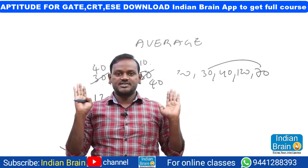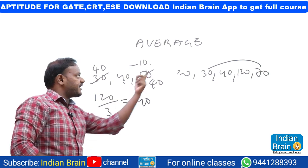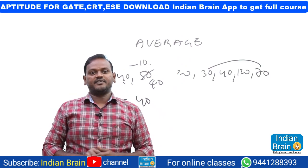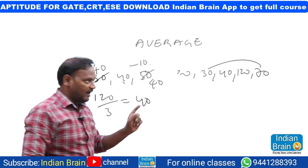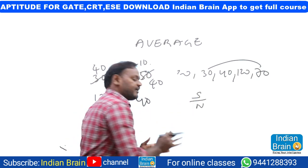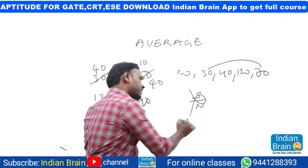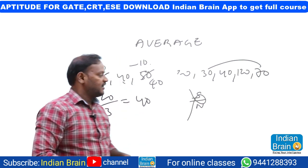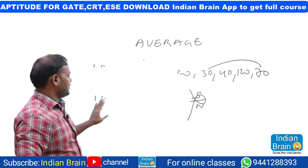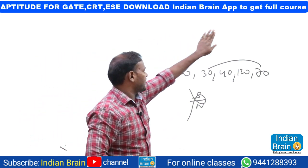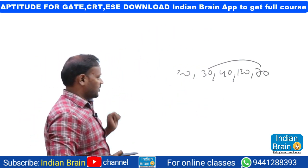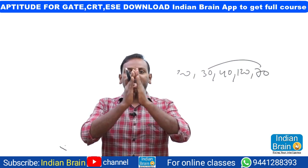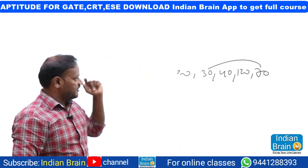Average is nothing but each number being equated. For three numbers it's easy to see, but for five, ten, or more numbers it gets difficult, which is why we use the formula: average = sum ÷ numbers. But even without the formula, we can crack any question — whether it's 10, 20, or 30 numbers. The concept is: each number is equated.